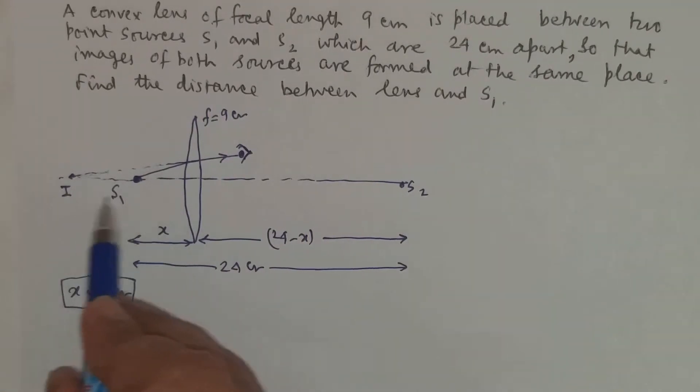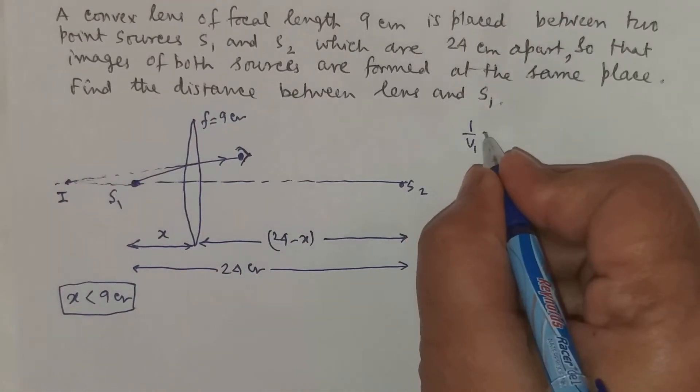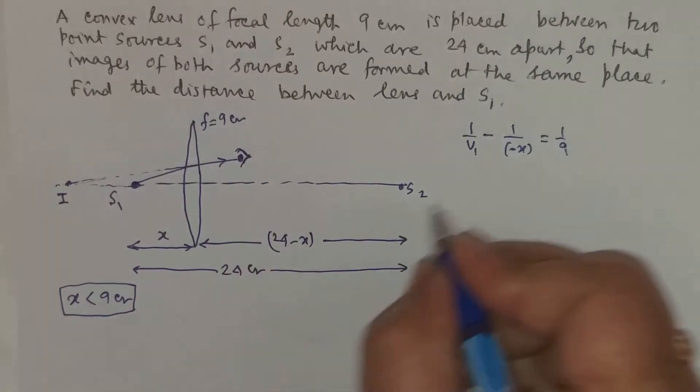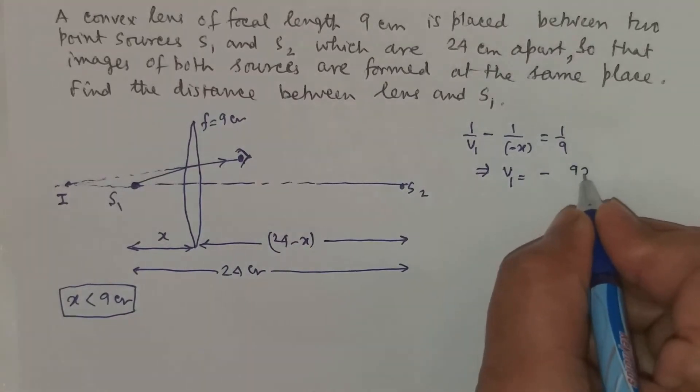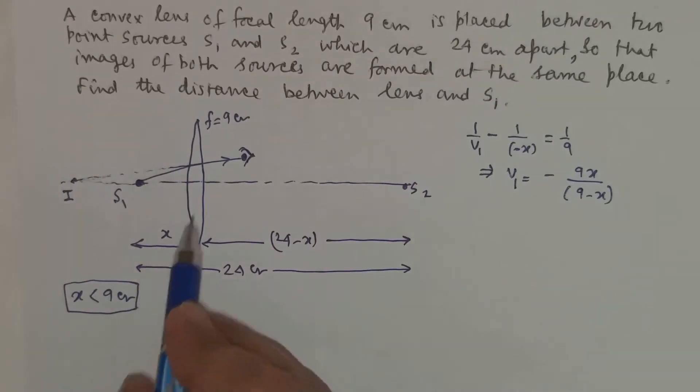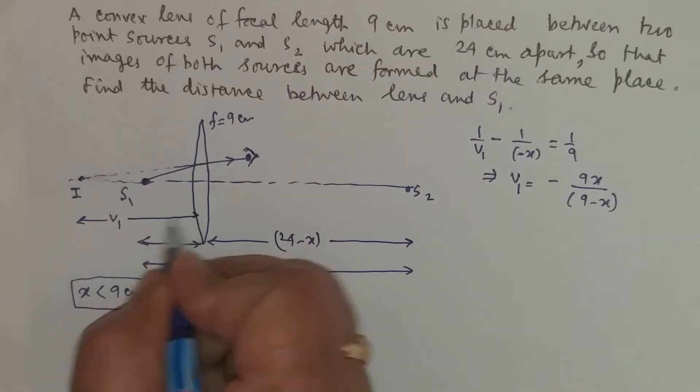So let us check what is this image distance for the first S1. So 1 by V1 minus 1 by minus x is equal to 1 by 9. If you simplify it, it gives you V1 is equal to minus 9x divided by 9 minus x. The minus sign indicates that it is to the left side. So this distance is V1 as we have calculated.